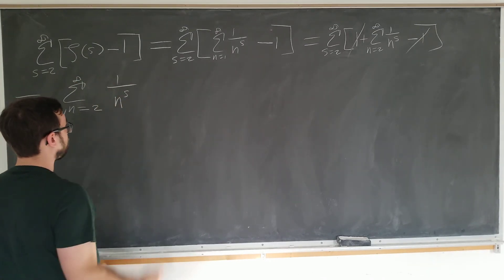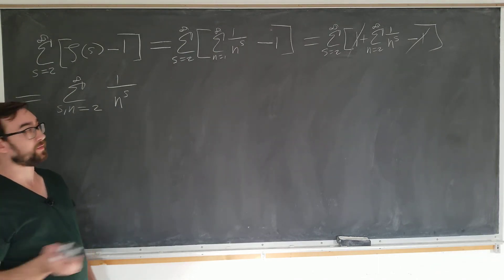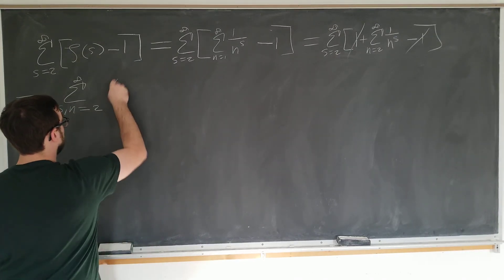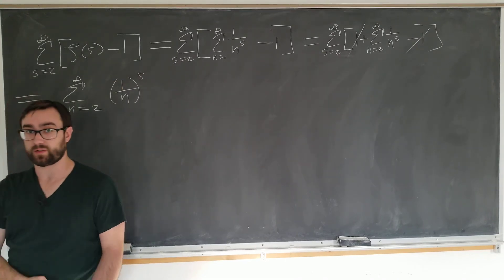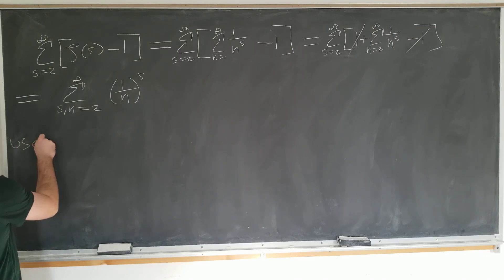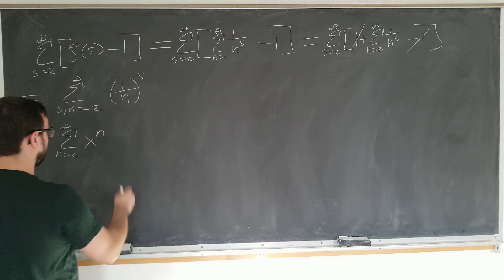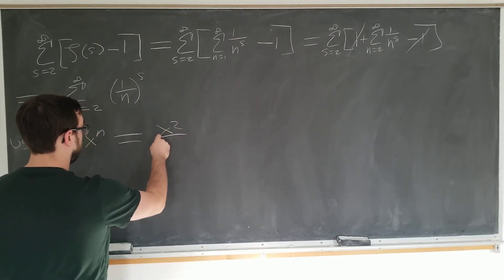So this is just a sum as s and n both range from 2 to infinity of 1 over n to the s. And we want to write this as a geometric series because we know how to sum those. So we're going to rewrite this as 1 over n to the s power, and we're going to use a familiar result for geometric series.